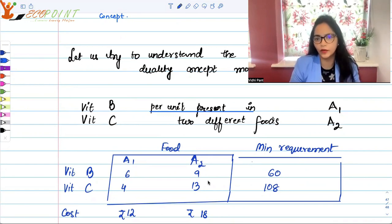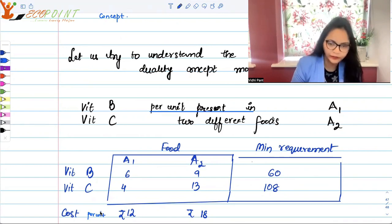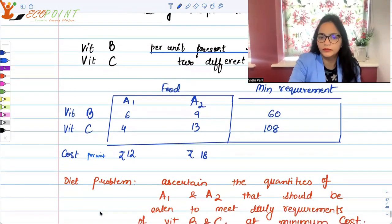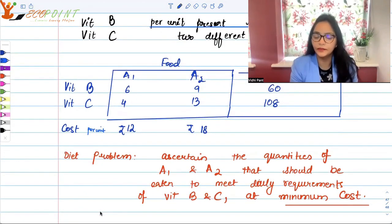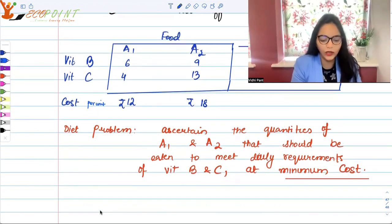I also have the cost of these food items. I have per unit cost is 12 rupees and 18 rupees for A1 and A2 respectively. Now the entire diet problem, this problem will be basically ascertaining. We would want to know what is the quantity of A1 and A2 food items that should be eaten every day to meet our daily requirements of vitamin B and C, and of course that has to be done at minimum cost.